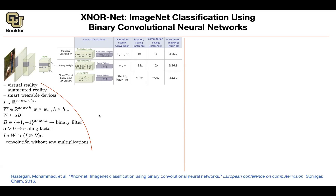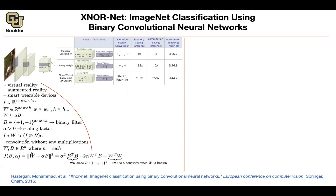Now let's flatten these tensors into arrays of N dimensions, where N = C × W × H. We want W to be as close as possible to αB, so we write an objective function and do a regression on that. Expanding ‖W − αB‖² gives: α²(B^T B) − 2α(W^T B) + W^T W.